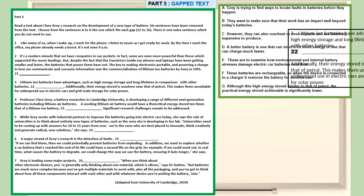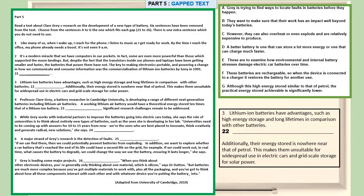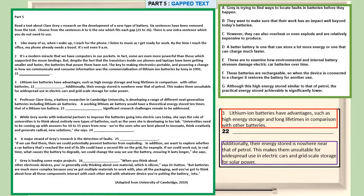Let's look at question 22, which appears in paragraph 3. The sentence before the gap reads: 'Lithium-ion batteries have advantages such as high energy storage and long lifetimes in comparison with other batteries.' So this sentence is giving us the advantages of lithium-ion batteries. Then comes the gap, question 22. The sentence after the gap reads: 'Additionally, their energy stored is nowhere near that of petrol,' making them unsuitable for widespread use in electric cars and grid-scale storage for solar power. So this sentence is giving us a disadvantage of lithium-ion batteries.